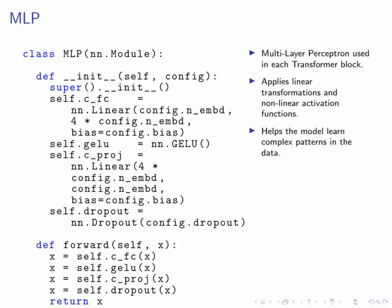Now let's talk about the MLP class. This multi-layer perceptron is used in each transformer block. During initialization, we set up the C_FC layer to project the input to 4 times the embedding dimension (4 * N_EMBD), optionally including a bias. The GELU activation function applies the Gaussian error linear unit non-linearity to the output of C_FC. Next, the C_project layer projects the GELU output back to the original embedding dimension, and dropout is applied for regularization. The forward method processes the input tensor by sequentially applying C_FC, GELU, C_project, and dropout, returning the final output.